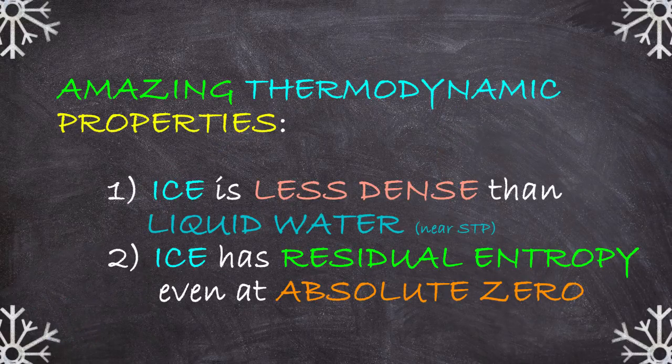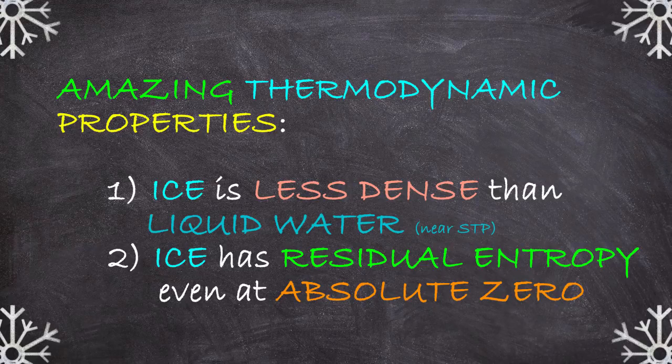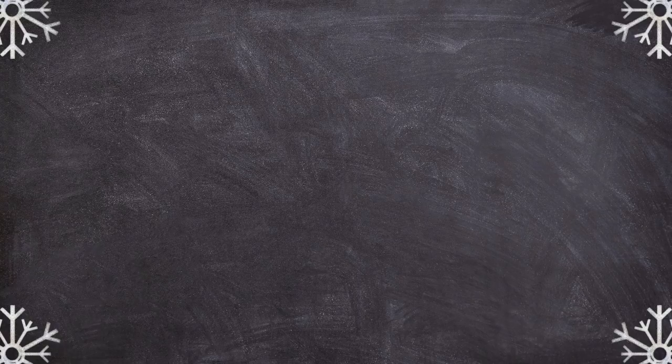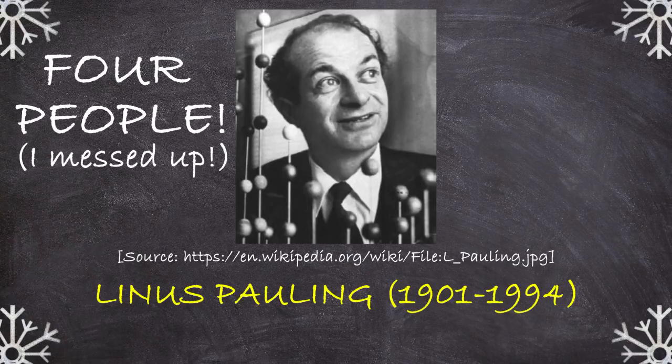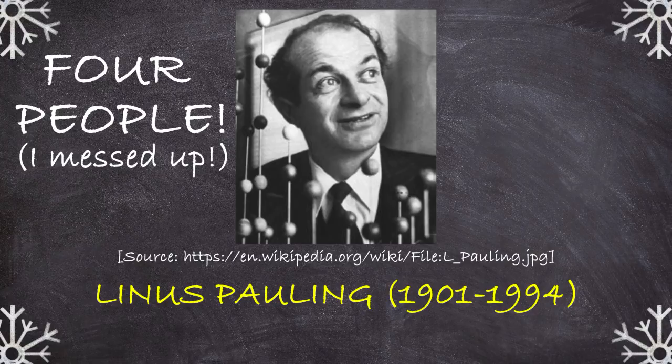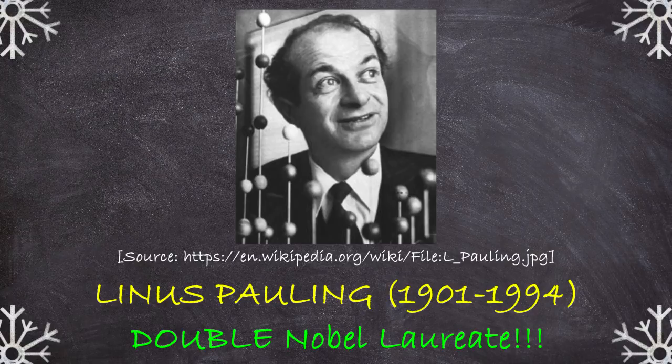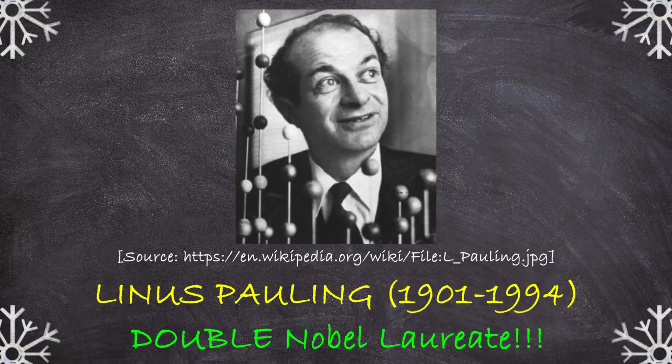It's an unusual property. Most substances don't have any residual entropy, and ice has a lot of it. A historical footnote, by the way, one of the first people to recognize that ice had this property was Linus Pauling, one of only three people in history to win two Nobel prizes, one for chemistry and one for peace. Pretty amazing stuff.